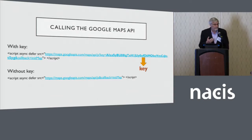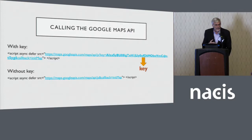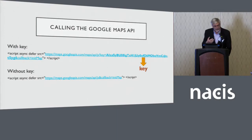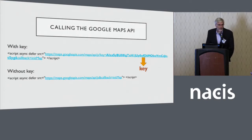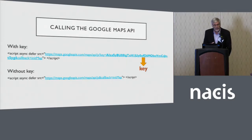In calling the Google Maps API, there is a key that you get from Google. For many years, you could use the Google Maps API without a key. The key is supposed to be specific to a server, although now they make it so the key can work on multiple servers — it can be assigned to a server but doesn't need to be assigned to a specific one.